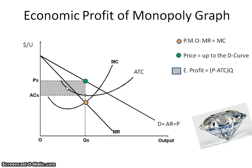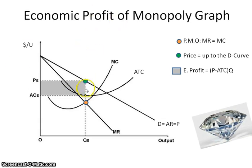But in the long run, a monopoly will always earn economic profit — and that, again, is seen by price minus ATC times quantity.